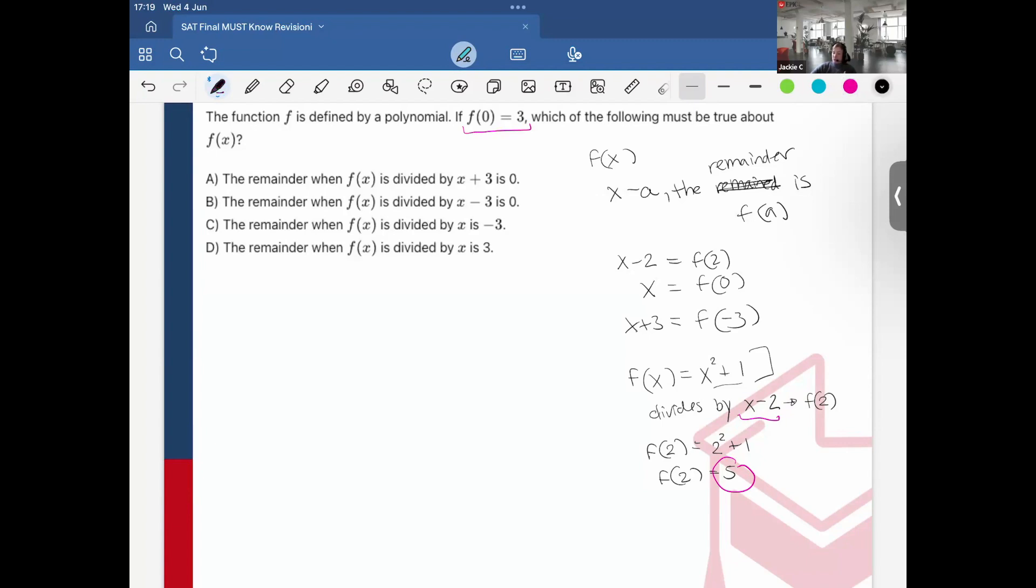this would just be x plus 3 would be the same as f(negative 3) equal to 0. x minus 3 would be f(3) equals 0. So not what I'm looking for. f(x) is divided by x is negative 3.